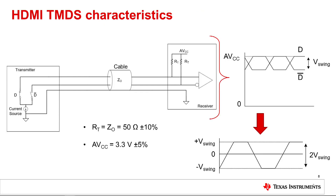In a standard HDMI connection, each line in each TMDS channel is terminated to 3.3 volts with a 50-ohm resistor that matches the characteristic impedance of the cable. The current source drives the single-ended V-swing voltage between 400 millivolts and 600 millivolts for the data lanes, and between 200 millivolts and 600 millivolts for the clock lane. As the data rate increases, the signals transmitted across the TMDS channels suffer from signal degradation and distortion due to PCB copper and dielectric losses. However, regardless of these losses, the amplitude of the signals must be within the single-ended V-swing voltage range to be HDMI compliant.